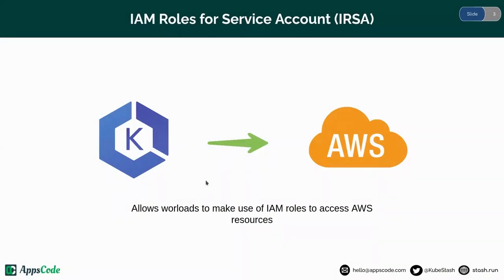Let's start with IRSA. IRSA basically allows Kubernetes workloads to make use of IAM roles to access AWS resources. Using IRSA, you can associate an IAM role with a Kubernetes service account. This service account can then provide AWS permissions to the containers in any pod that uses that service account. With this feature, you no longer need to provide extended permissions to the Amazon EKS node, and the node can call AWS APIs without any credentials.